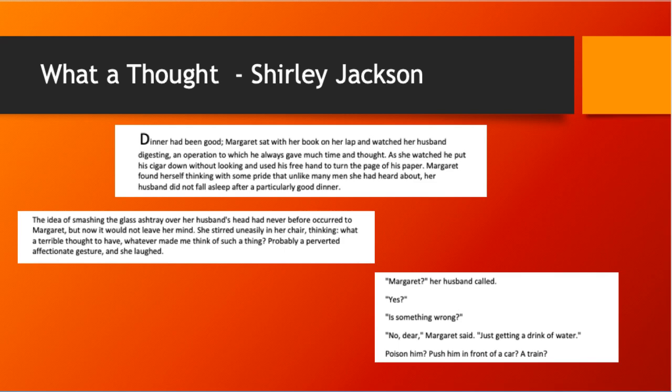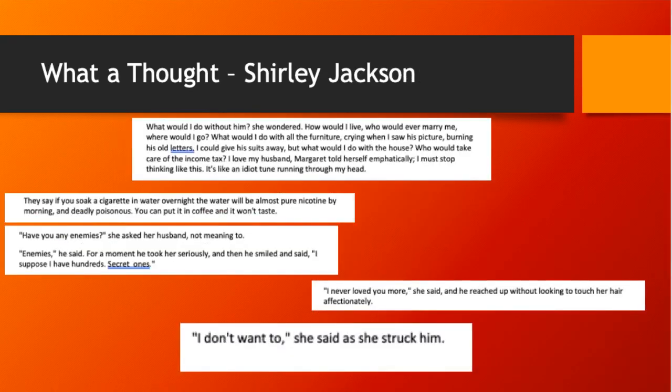Poison him? Push him in front of a car? A train? Margaret spends this entire story musing about what terrible ways she could employ to murder her husband — smash him over the head, poison his water. She even looks for excuses, ways she could get away with it. 'Have you any enemies?' she asked her husband.